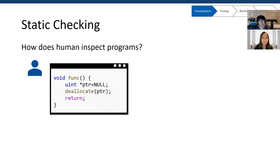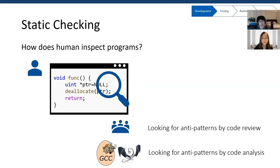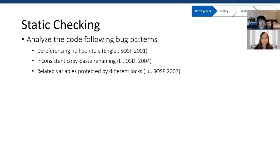First, let's start with static checking at the development stage. After implementing a program, a widely used process in industry is code review. During a code review, people look at the code to find anti-patterns that might suggest bugs. To automatically do this, we can replace human code reviewers with a compiler. We let compilers scan through the code and find anti-patterns. Different bug patterns will lead to different static checking tools. Some look for dereferencing null pointers, some look for renaming errors in copy-pasted code, and some look for concurrent bugs by analyzing correlations between variables accessed in the code.